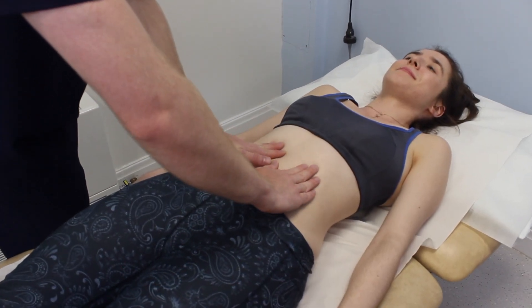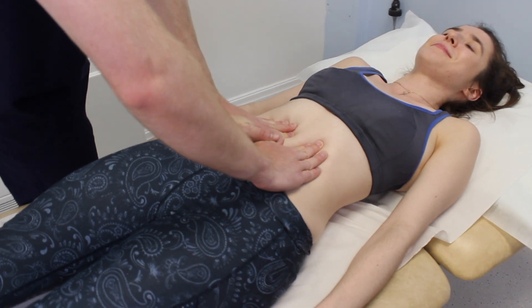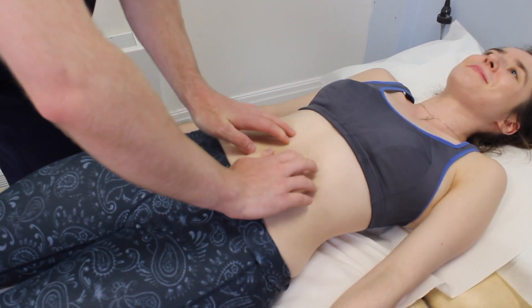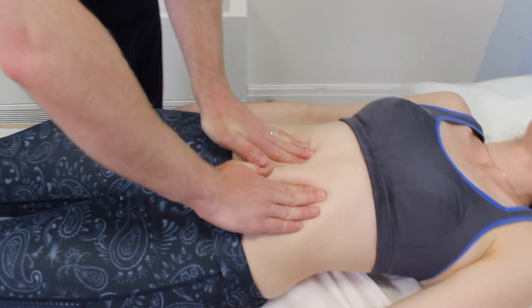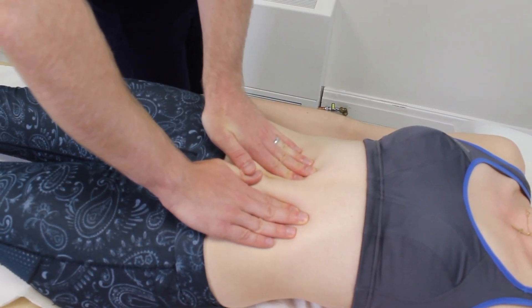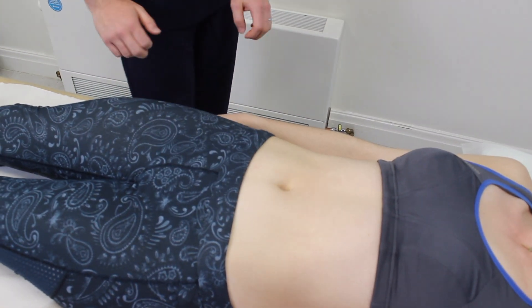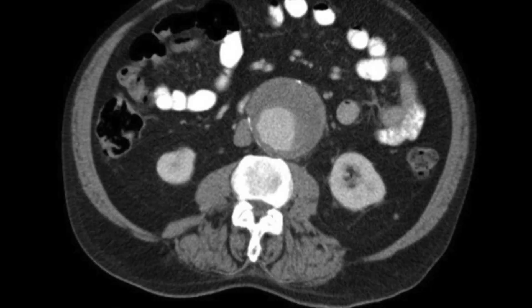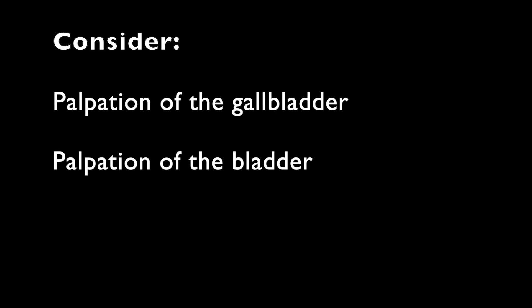Palpate the aorta by placing both hands superior to the umbilicus in the midline. If you feel a pulsatile mass pushing outwards, this may suggest an abdominal aortic aneurysm, however this is a crude test and imaging is needed if you suspect a AAA. If indicated, you may also want to palpate the gallbladder and bladder, though in most healthy individuals neither will be palpable.